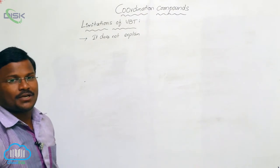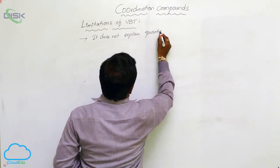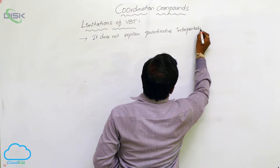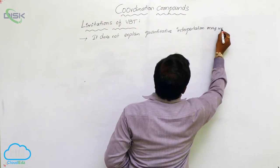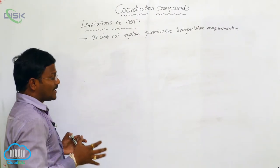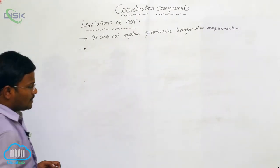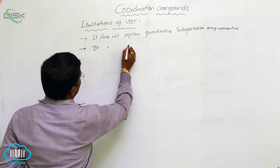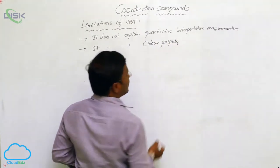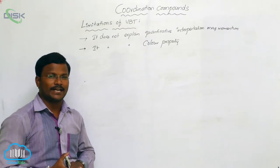Valence Bond Theory (VBT) does not allow quantitative interpretation of magnetic momentum or magnitude of metal complexes. It does not explain the magnetic data available with coordination complexes, nor does it explain the color property of coordination complexes. Only some amount of magnetic properties are satisfactorily explained by VBT.